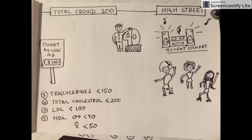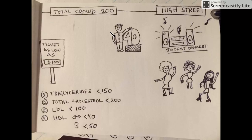You can see that three women are dancing and singing. The total crowd at the concert is about 200, and the ticket is as low as $100. Since only women are allowed, there's a guy standing beside the area where the concert is happening, just watching the women dancing.